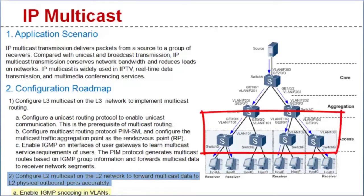In this figure, you need to enable IGMP snooping in the VLANs corresponding to user-side VLAN-IF interfaces on aggregation switches, as well as the VLANs used to forward multicast data on access switches.